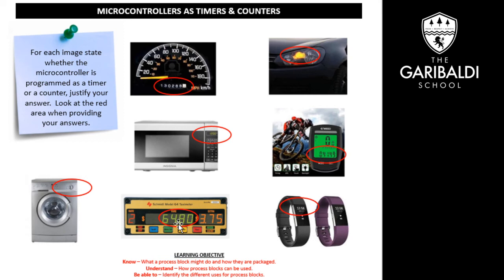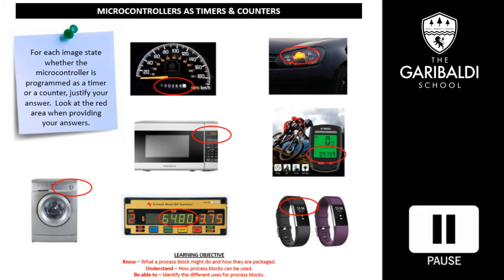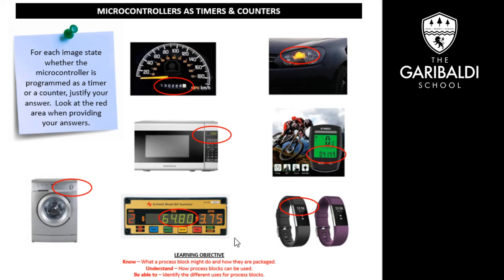Going back to one-time programmable PICs — PICs that are programmed at the factory and cannot be reprogrammed — they come in many different forms, but essentially they are either a timer or a counter. There's a task for you here: for each of the examples given, state whether the microcontroller is programmed as a timer or a counter, and try to justify your answer. I'm going to select the pause button and give you a moment to have a go. The PowerPoint slide will have a little bit more information about that.